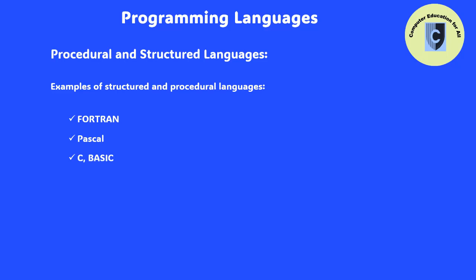Some examples of structured and procedural languages are Fortran, Pascal, C, Basic, Algol, PL/1, and Eta Pascal.